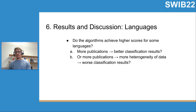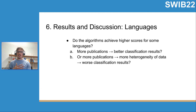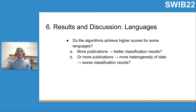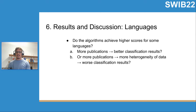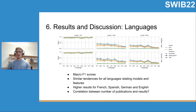We have some research questions about the results. The first group concerns languages: do the algorithms achieve higher scores for some languages, especially considering the number of publications? Does more data lead to better classification results, or does more data lead to more heterogeneity and therefore worse classification results — which actually happens in some classification tasks?